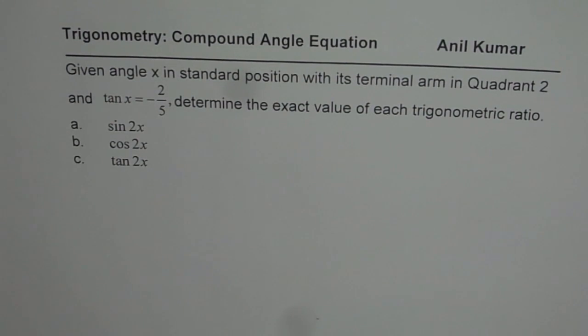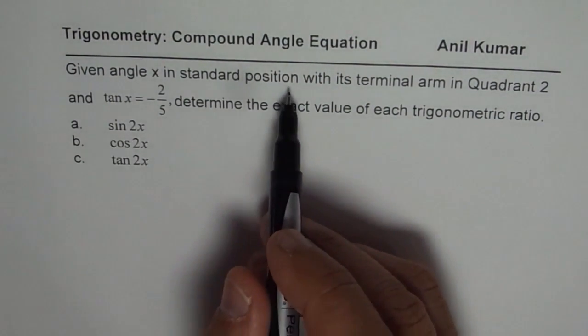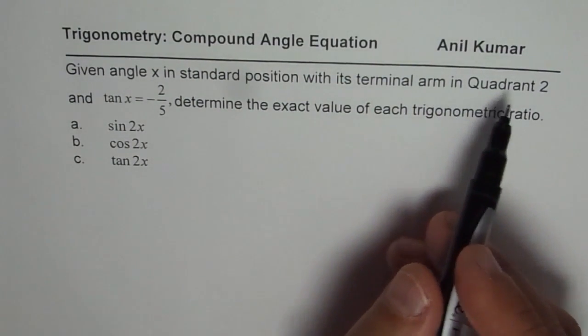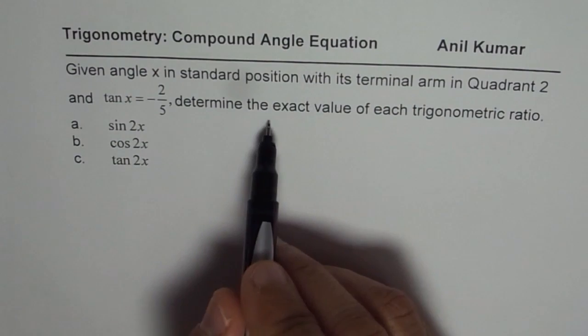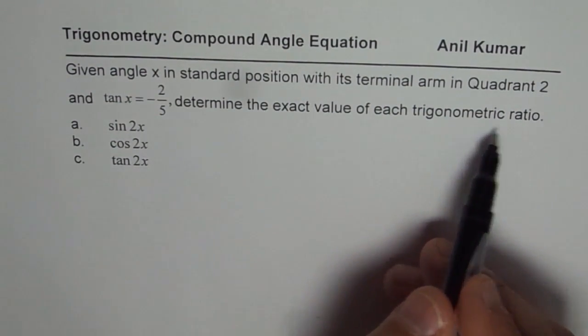I'm Anil Kumar and here is a practice question for you on trigonometric ratios. We are working on compound angle. Given angle x in standard position with its terminal arm in quadrant 2 and tan x equals minus 2 over 5, determine the exact values of each trigonometric ratio.